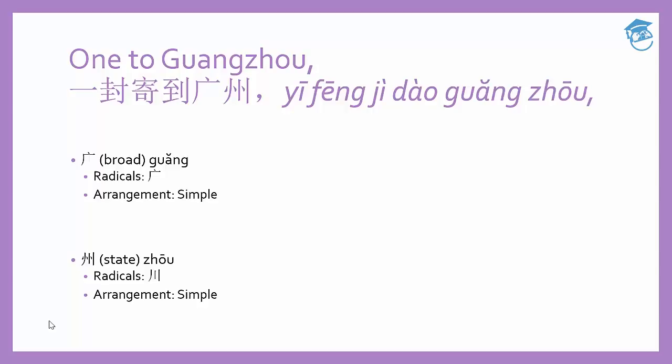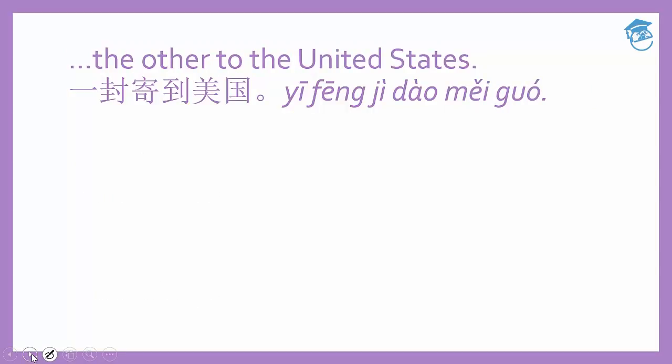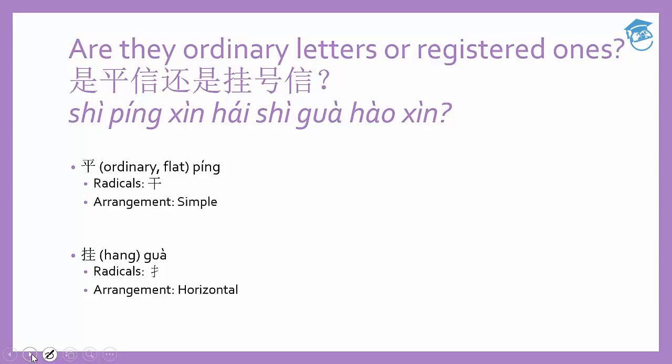Emma hasn't finished yet and she states further: the other to the United States — 一封寄到美国. It's the same structure: one letter to be sent to the United States. You have already learned all the words here. 一封 is the number and quantifier for letter, 寄到 means post to, and 美国, as you have learned before, is the United States. So Xiaoli understands that one letter is an international letter, and he needs to confirm the requirements.